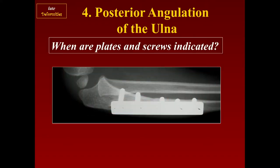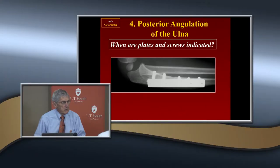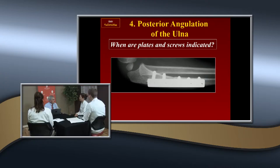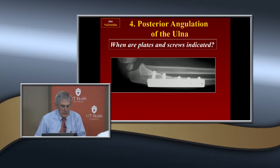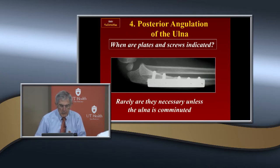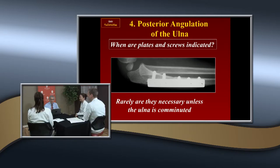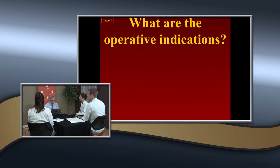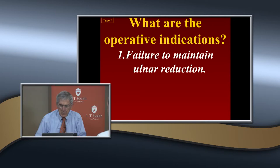Now, posterior fixation — in adults you normally put plates and screws for better cortical contact, usually because they're comminuted. When would they be necessary in a child? When it's length unstable — when it's comminuted. Those are the operative indications.